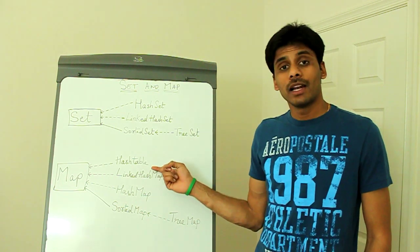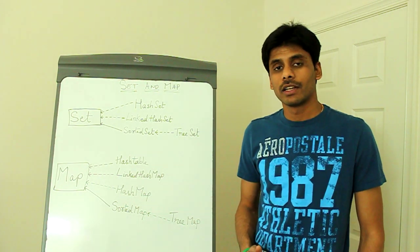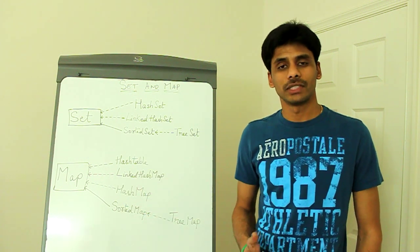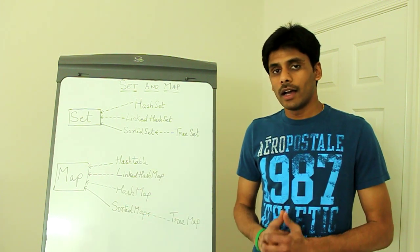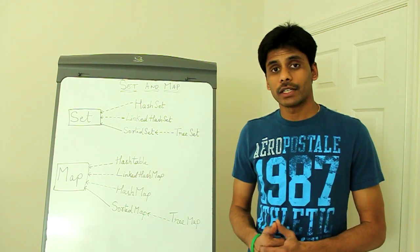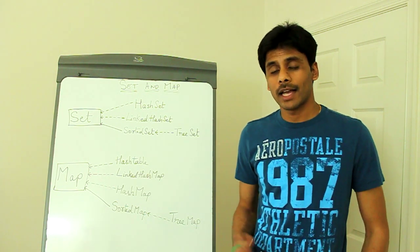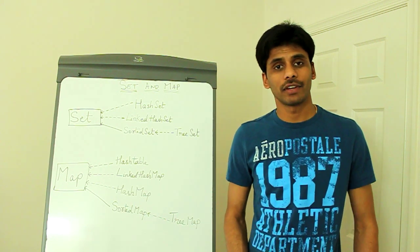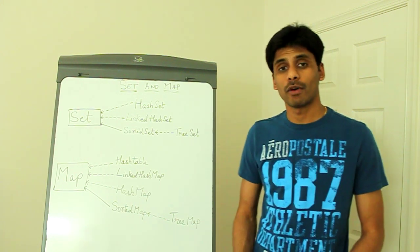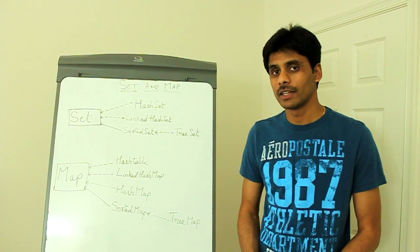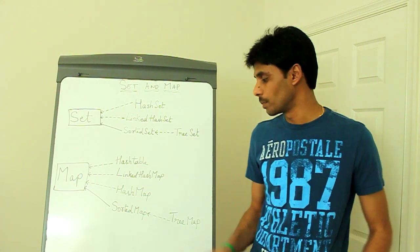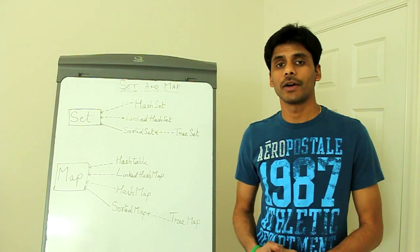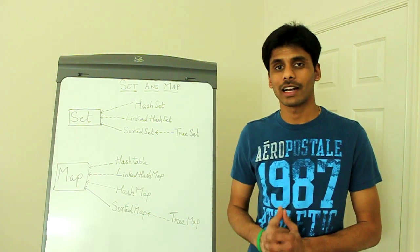A Hashtable, like the Vector class under List, is a leftover map class from earlier versions of Java. Similar to Vector, a Hashtable's methods are synchronized for thread safety, which adds performance overhead. So you should not use Hashtable — use HashMap instead, and if you need thread safety you have utility methods on the java.util.Collections class.